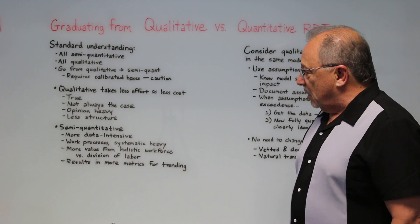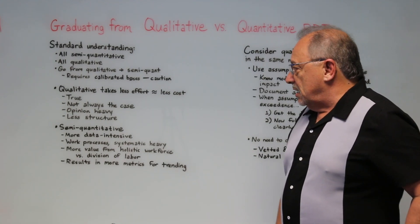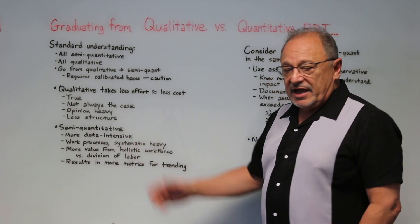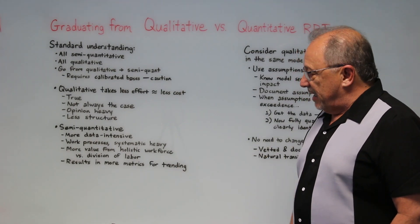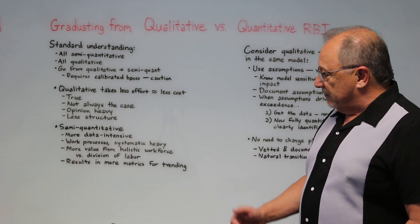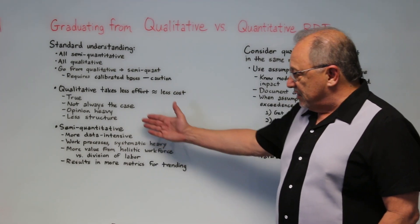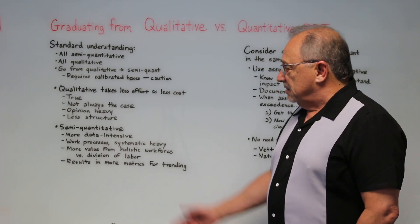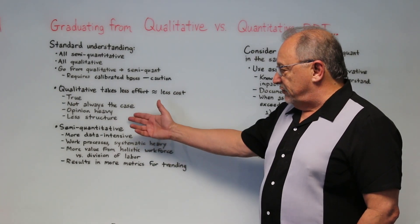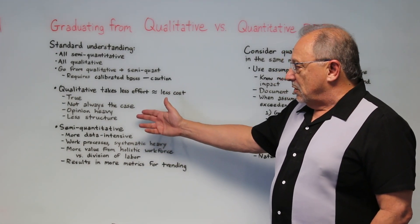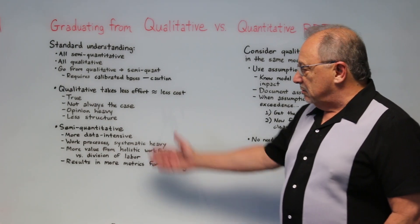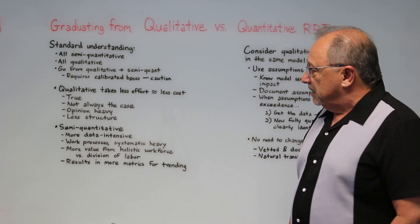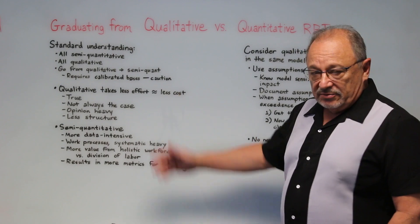Let's talk about qualitative a little bit more. Qualitative by its very nature is opinion-heavy. We're not going to the data as much — the databases and everything. We're using the opinions of people involved in the process. Through experience, qualitative studies are usually less structured, less systematic, and depend a lot on opinion.